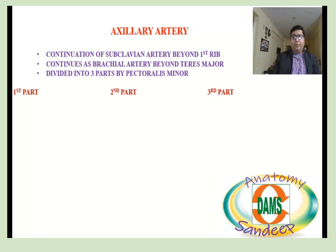We have three parts for the axillary artery — first, second, and third part. These parts give branches as follows: the first part gives one branch, the second part gives two branches, and the third part gives three branches.